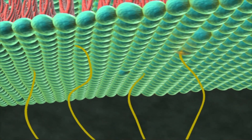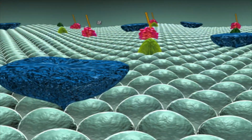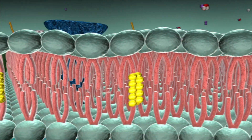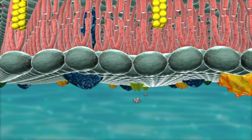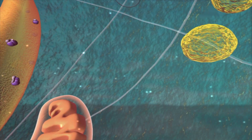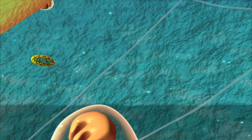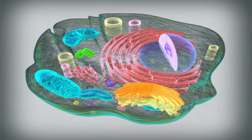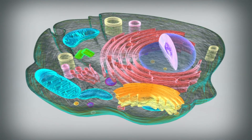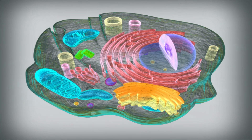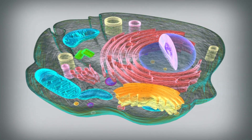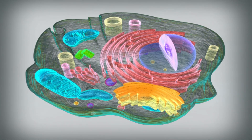The outer part of the cytoplasm without granules is called ectoplasm and the inner part with granules is called endoplasm. The endoplasm contains organelles and non-living materials called ergastic particles.